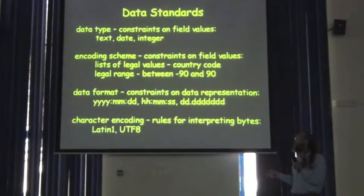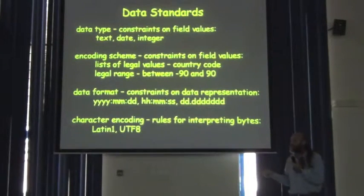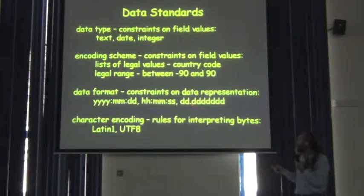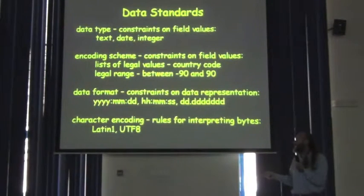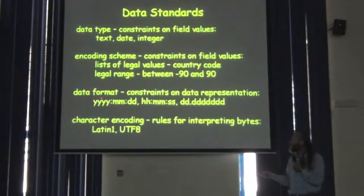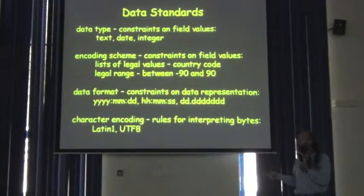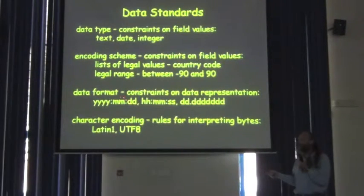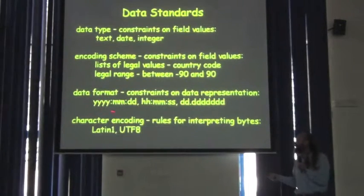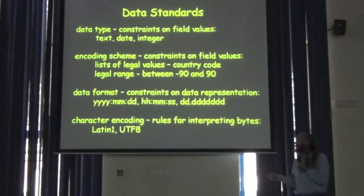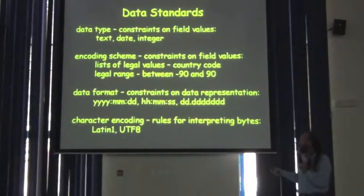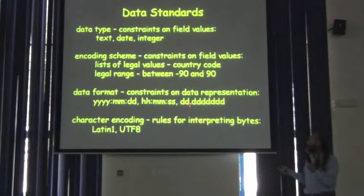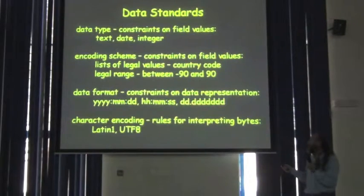Moving on, the next standard is a standard data format. This is a constraint on the representation of data within a data figure. Here are examples in time and geographic coordinates. What I have here is a pattern to be followed for the format of a date: it's supposed to have four digits for the year, followed by a colon, followed by two digits for the month, followed by a colon, followed by two digits for the day. This is a data format — it says that when I have dates, I want them to be in this format. It constrains what I am willing to understand about dates. Similarly, you might have one for hours, minutes, and seconds, with digits on both sides of the decimal.